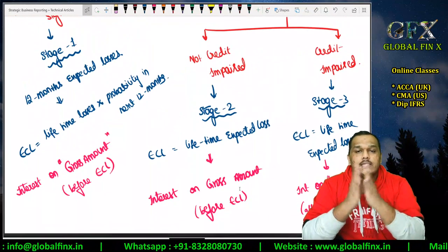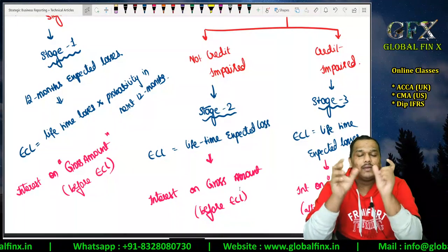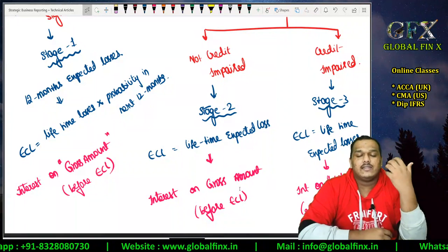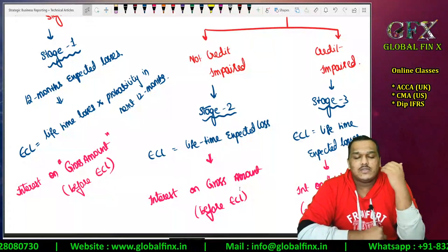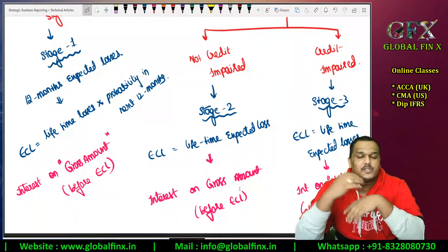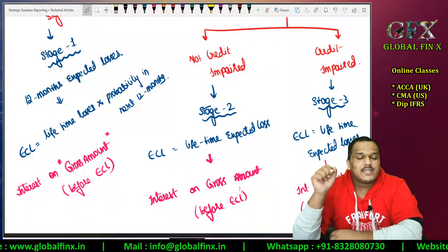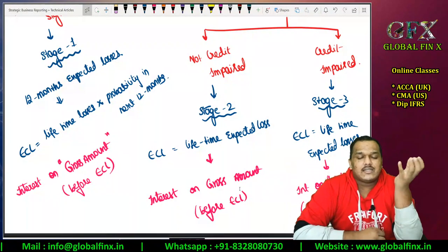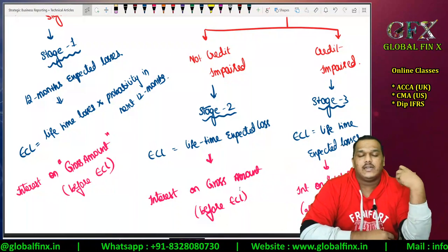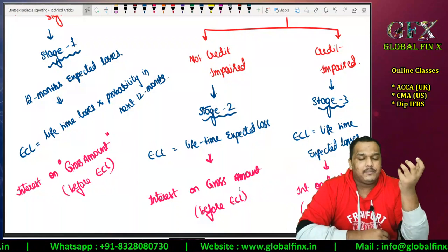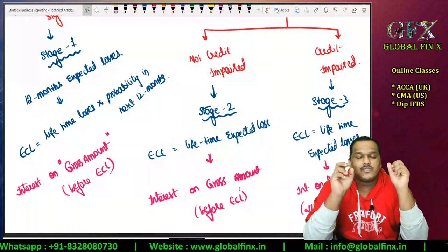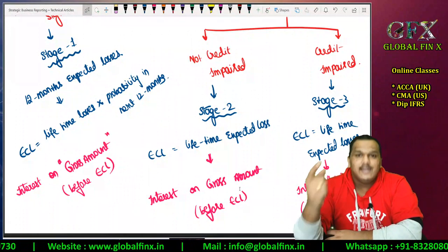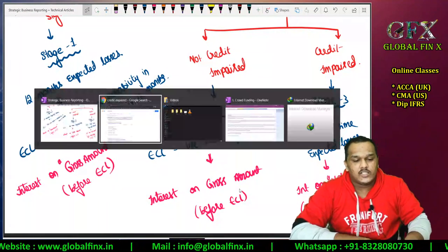To recap: credit risk means risk of non-payment. IFRS 9 states you must create a loss allowance. If credit risk has not increased significantly since inception, create 12-month expected losses — calculated as lifetime losses multiplied by probability of default in the next 12 months. If credit risk has significantly increased, check whether it is credit impaired: if not credit impaired (Stage 2), create lifetime expected losses with interest on gross amount; if credit impaired (Stage 3), create lifetime expected losses but recognize interest on net amount.